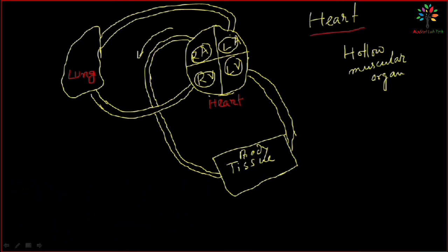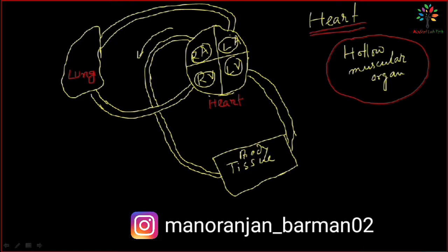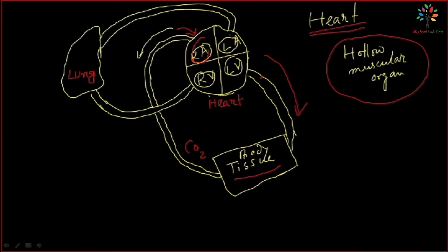Our heart is a hollow muscular organ. Our heart continuously pumps blood through a closed system of blood vessels, and it ensures that every tissue and cell gets oxygenated blood. It carries the deoxygenated blood from the tissue of all the body back to the heart, and from the heart it sends it to the lungs for oxygenation.